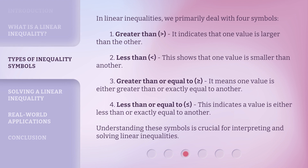In linear inequalities, we primarily deal with four symbols. 1. Greater than (>): it indicates that one value is larger than the other. 2. Less than (<): this shows that one value is smaller than another. 3. Greater than or equal to (≥): it means one value is either greater than or exactly equal to another. 4. Less than or equal to (≤): this indicates a value is either less than or exactly equal to another. Understanding these symbols is crucial for interpreting and solving linear inequalities.